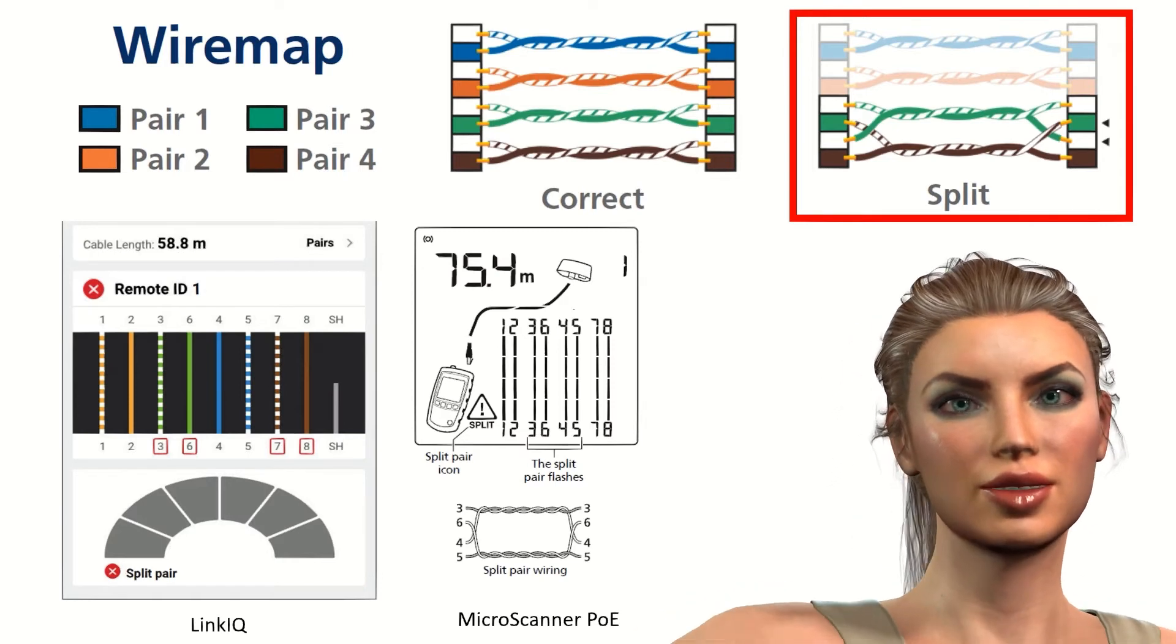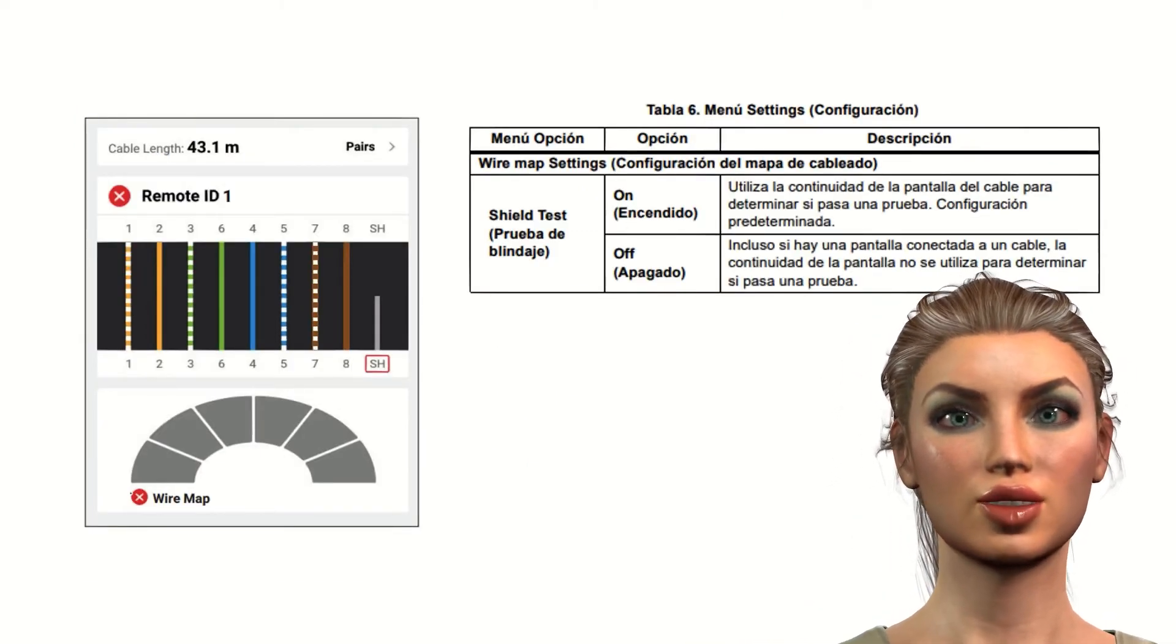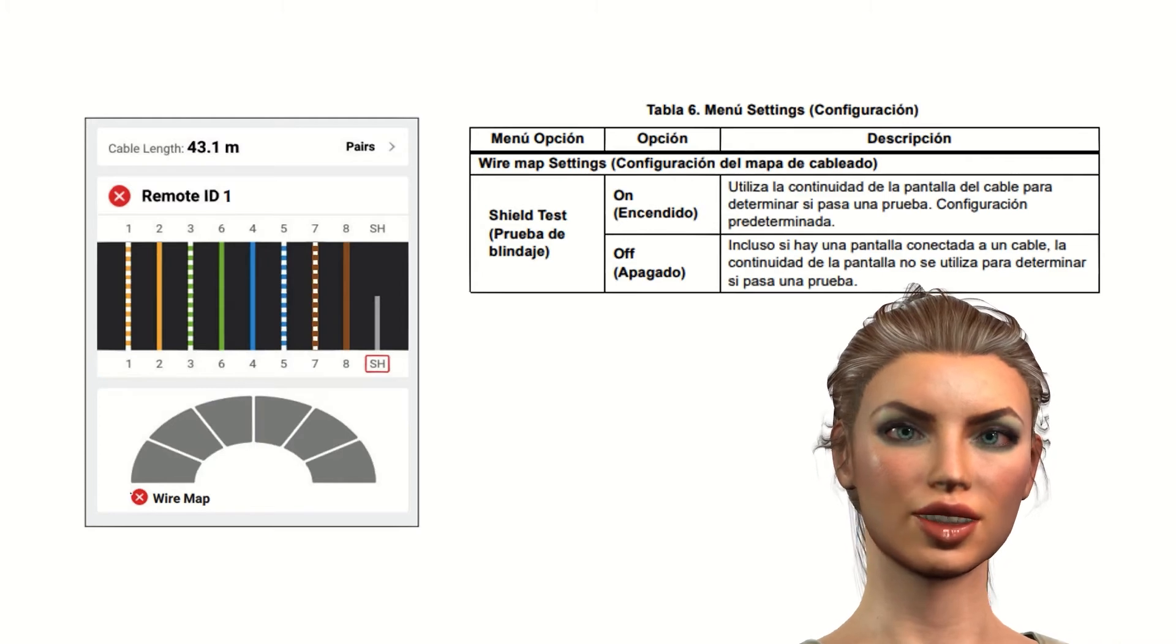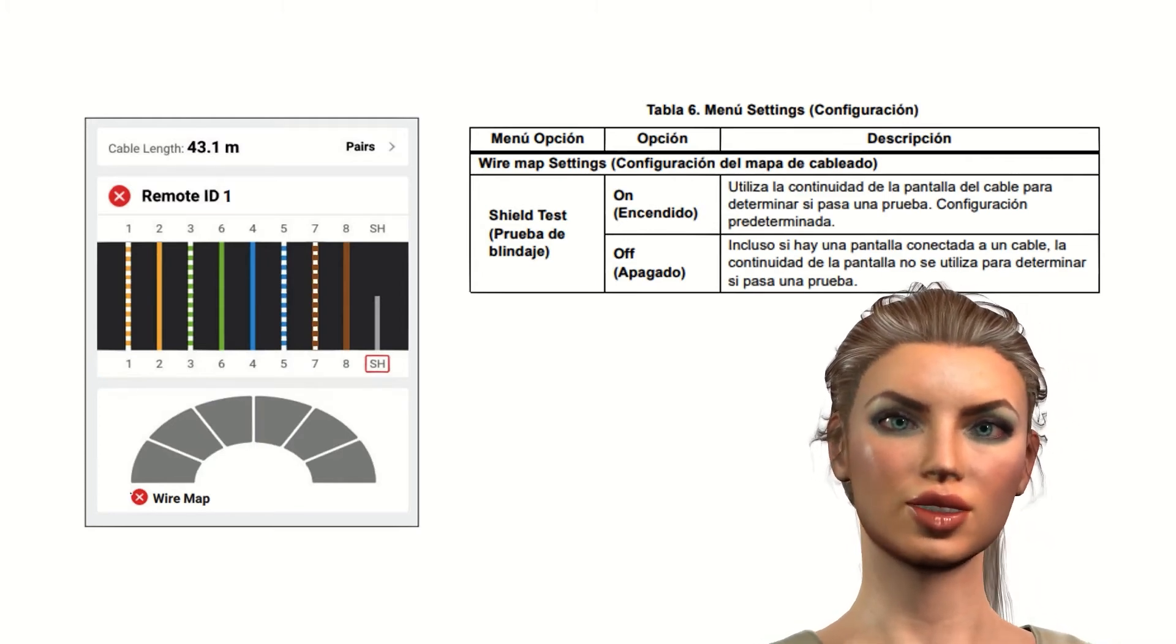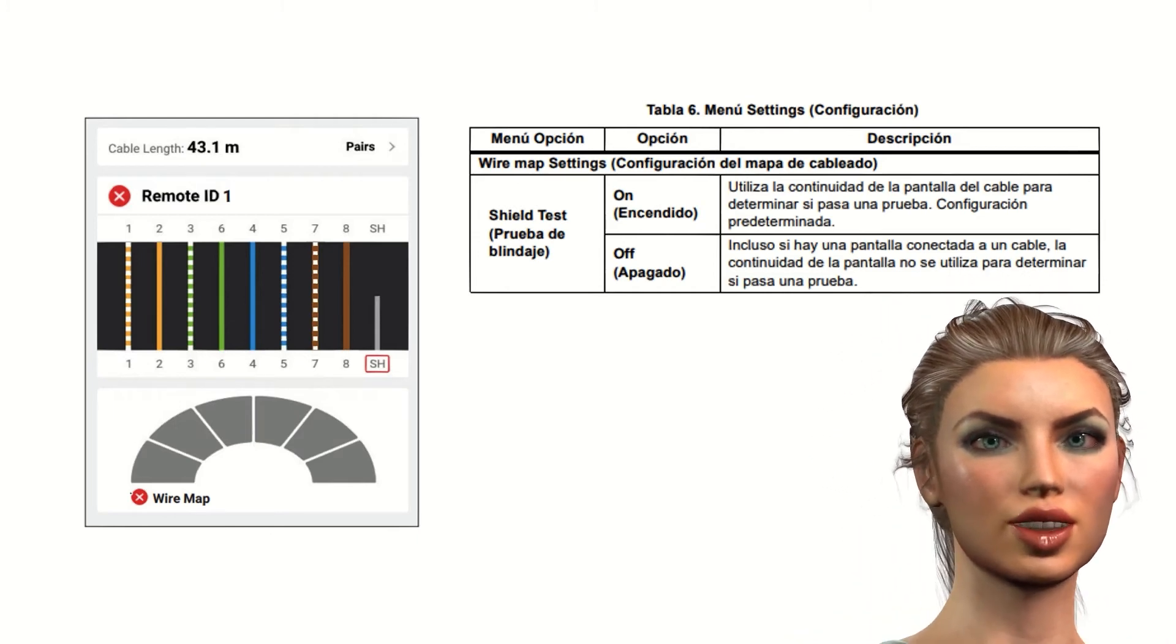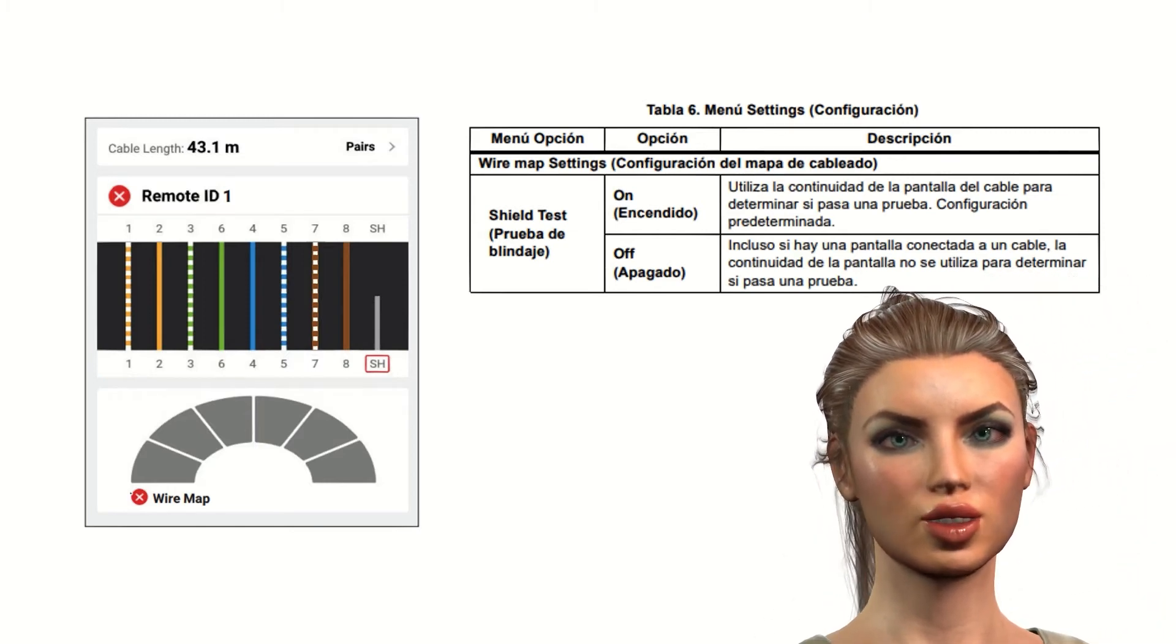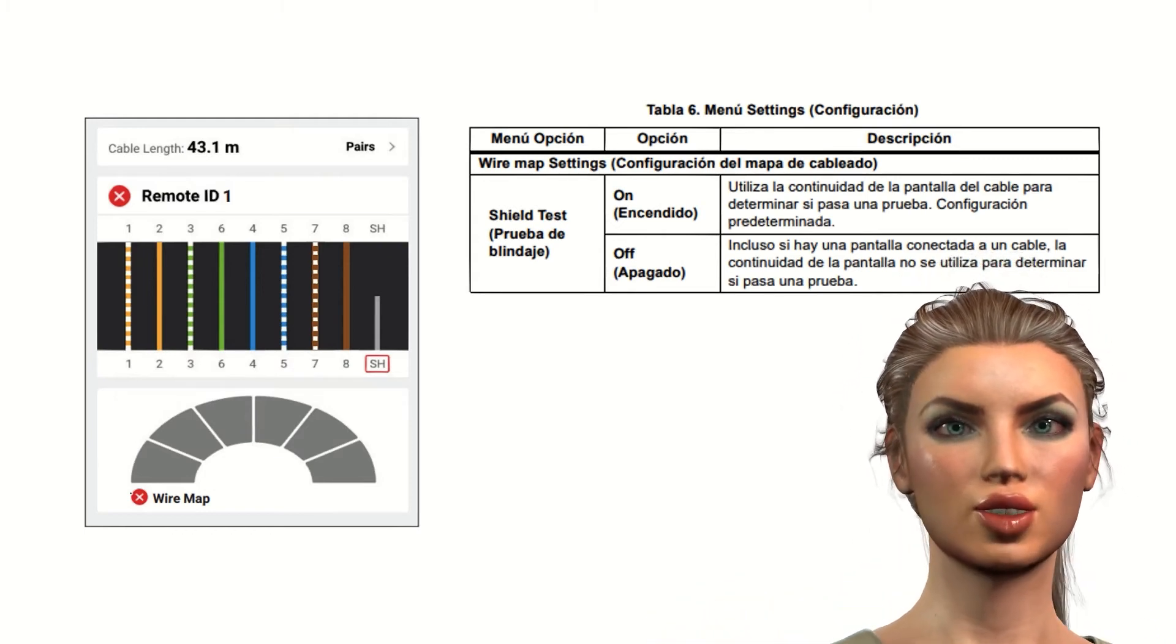This was referring to the pairs, but we also have to take into account whether or not the cable is shielded. In the case that the cable has shielding, another problem that we can detect is precisely the breakage of this shielding using equipment such as the Cable IQ or the Link IQ. Likewise, in the event that the cable is of the UTP type, that is it does not have shielding, we must properly configure the instrument to indicate that it should not verify the shielding in order to avoid detecting a false break in it.